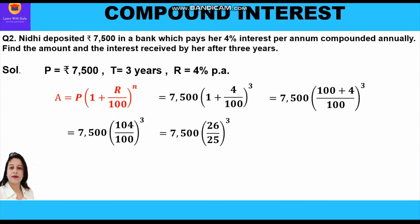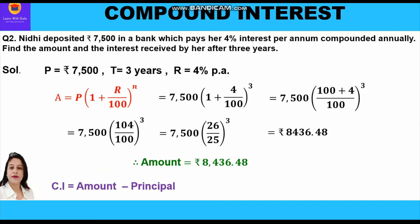Dividing numerator and denominator by 4, we get 7,500 × (26/25)^3. Solving this gives the amount as rupees 8,436.48. The compound interest is 8,436.48 − 7,500 = rupees 936.48, which is the compound interest Nidhi will receive from the bank after three years.